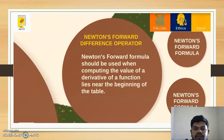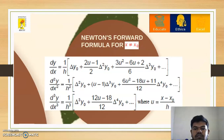In Newton's forward difference operator, there are two formulas: one is for x is equal to x0 and another one is for x is not equal to x0. First, we will discuss for x is not equal to x0 — that means except the first value.